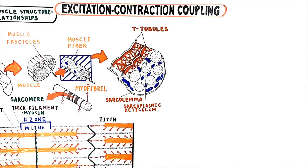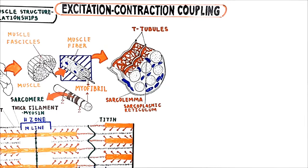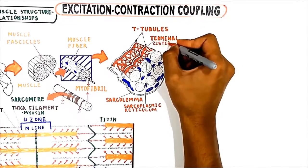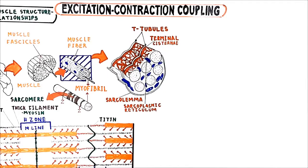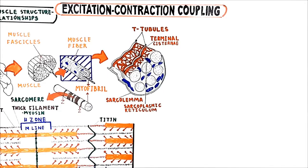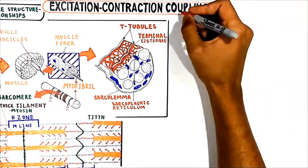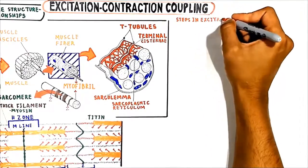Here we have the sarcoplasmic reticulum, which is part of the internal membrane system. One function of the sarcoplasmic reticulum is to store calcium. In skeletal muscle, most of the calcium is stored in the terminal cisternae, close to the T-tubule system. The terminal cisternae of the sarcoplasmic reticulum make intimate contact with the T-tubules in a triad arrangement.